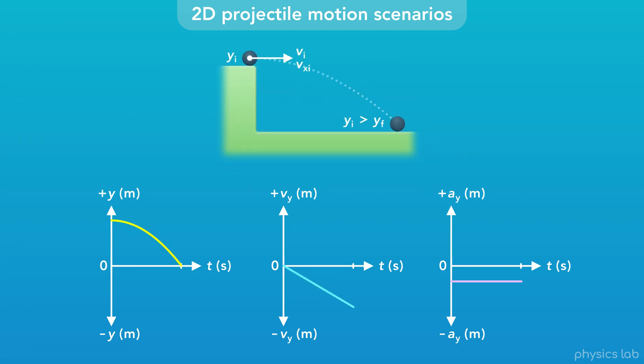If the launch angle is 0, so the initial velocity is horizontal, the y position starts at the maximum height with 0 slope, and then it decreases to 0. And the y velocity starts at 0 and increases in the negative direction.